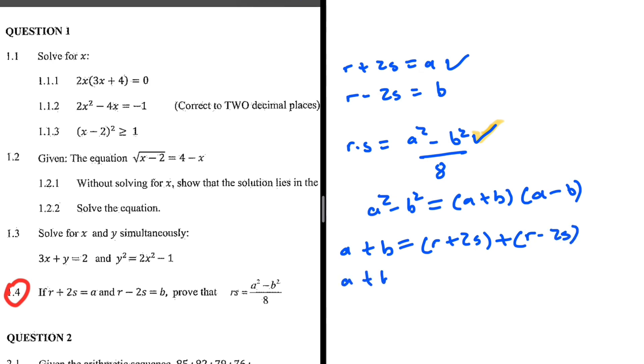b is r minus 2s, so r plus r is 2r. So we have a plus b being equals to 2r. 2s minus 2s will give us 0. So there we go, we have a plus b which equals 2r.